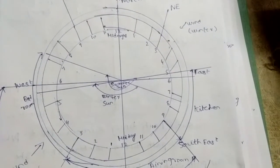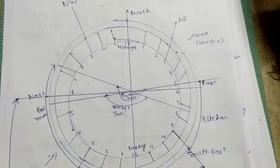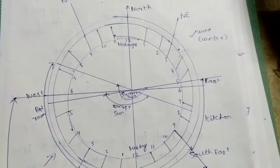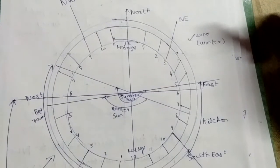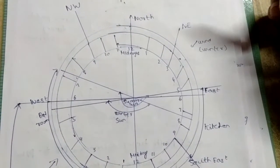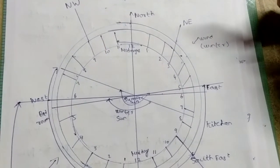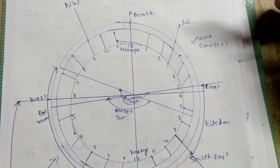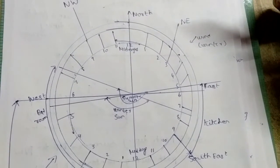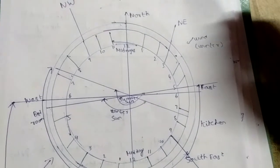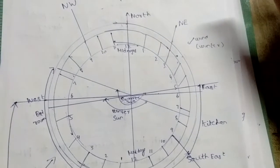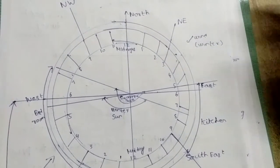Before proceeding, we need to know some basics. The earth is divided into two parts: the northern hemisphere and the southern hemisphere, separated by the equator. Our country, India, is located in the northern hemisphere. We also need to consider the direction of sunrise and sunset in summer and winter with respect to the northern hemisphere.